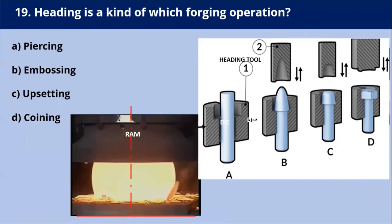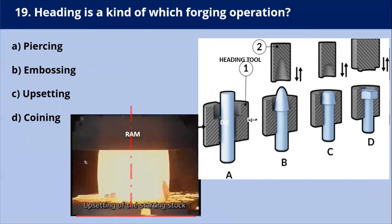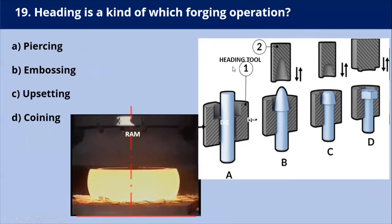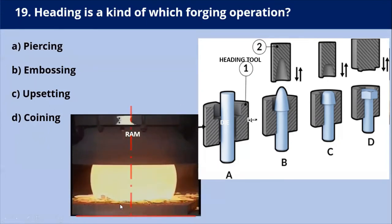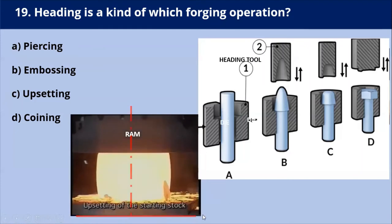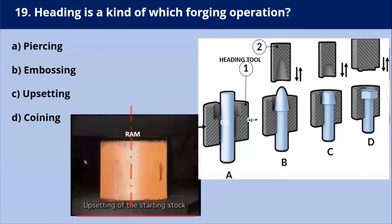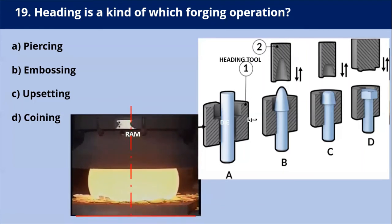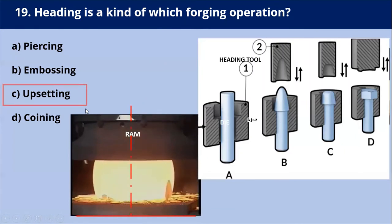Heading is a kind of which forging operation? Heading is a kind of upset forging operation. The heading tool or ram is positioned perpendicular to the cross-section end face of a rod or bar, which is gripped into the die. On application of pressure, the length of the rod is reduced and the diameter increases. This process is essentially used to produce bolt heads or screw heads. So heading is a kind of upsetting operation.